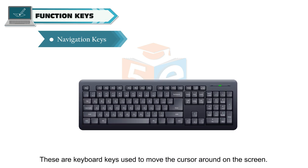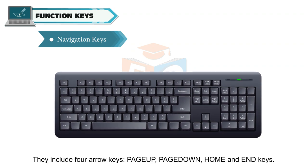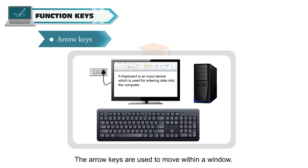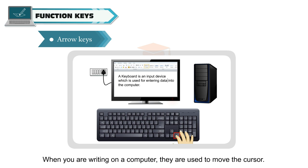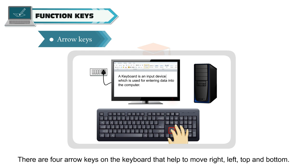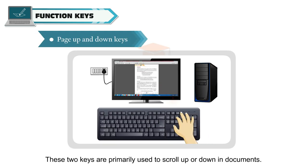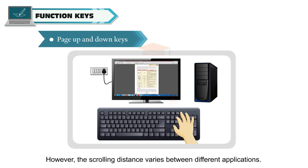Navigation keys are keyboard keys used to move the cursor around on the screen. They include 4 arrow keys, page up, page down, home, and end keys. The arrow keys are used to move within a window and to move the cursor while writing. A cursor is a vertical blinking line where you can write something. There are 4 arrow keys that help to move right, left, top, and bottom. The page up and page down keys are primarily used to scroll up or down in documents, though the scrolling distance varies between different applications.